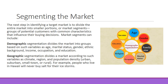Then we have geographic segmentation, which divides the market according to variables such as climate, region, and population density. We use the terms urban, suburban, small town, or rural — and rural is like farmland. For example, people who live in Hawaii will never buy salt for ice storms because they don't get them. Throughout the country, various products are more popular in certain places — mountain climbing equipment is much more prevalent in Colorado than in Delaware.